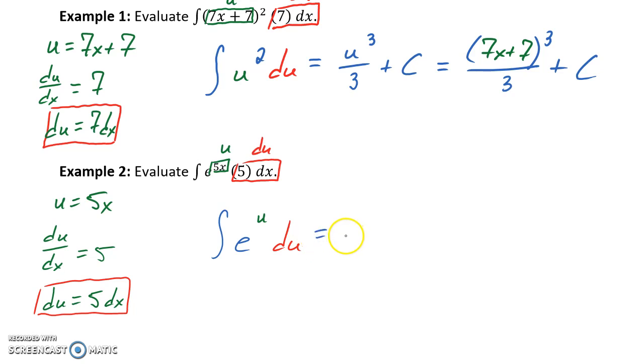We know that the integral of e to the u will still just be e to the u plus some constant c, and then in our last step we'll substitute back in what we substituted out originally. So we'll end up with e to the 5x, plus some quantity c.